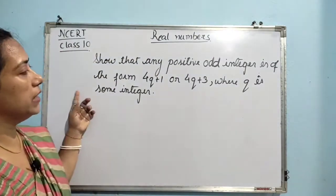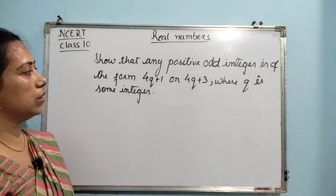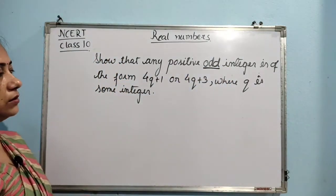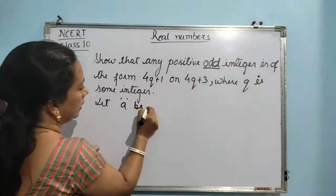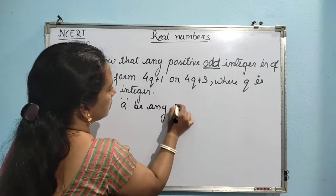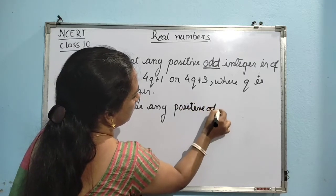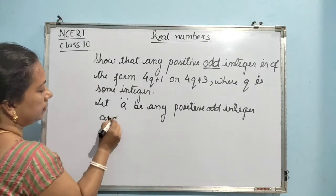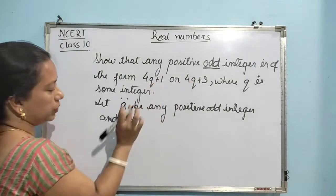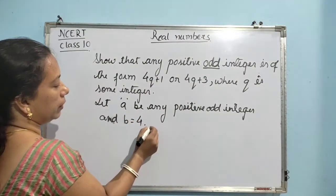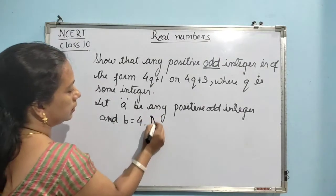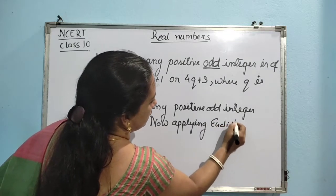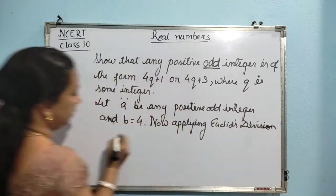The next question is: show that any positive odd integer is of the form 4Q plus 1 or 4Q plus 3, where Q is some integer. Note that they have used the word 'odd integer.' Let A be any positive odd integer and B is equal to 4, since it is in the form 4Q plus something. Applying Euclid's division lemma,